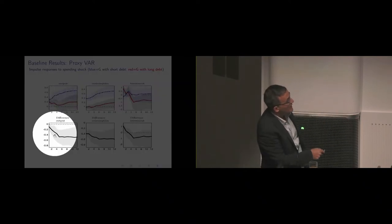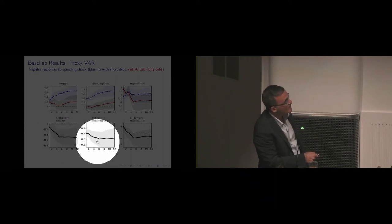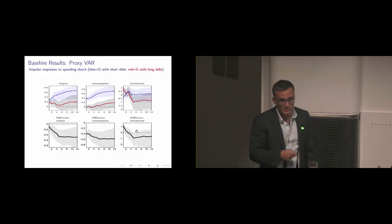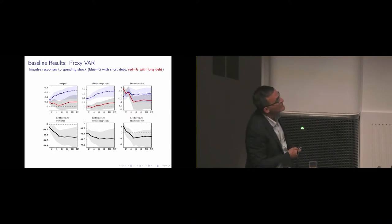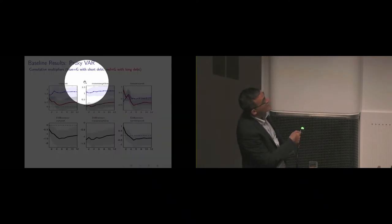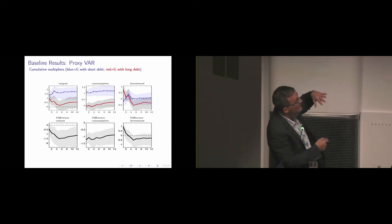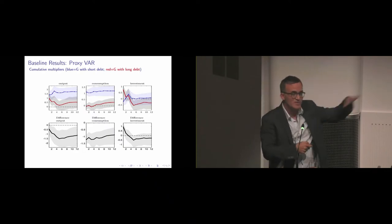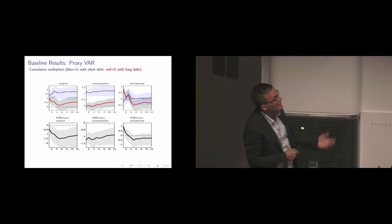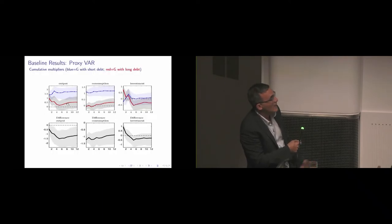The bottom graphs show the difference in terms of these estimates, and these differences across short-term and long-term financing are statistically significant for output and consumption. There's not a statistically significant difference for investment. It's consumption which is coming up in every estimation of the model. It's the robust margin. There's a big difference.